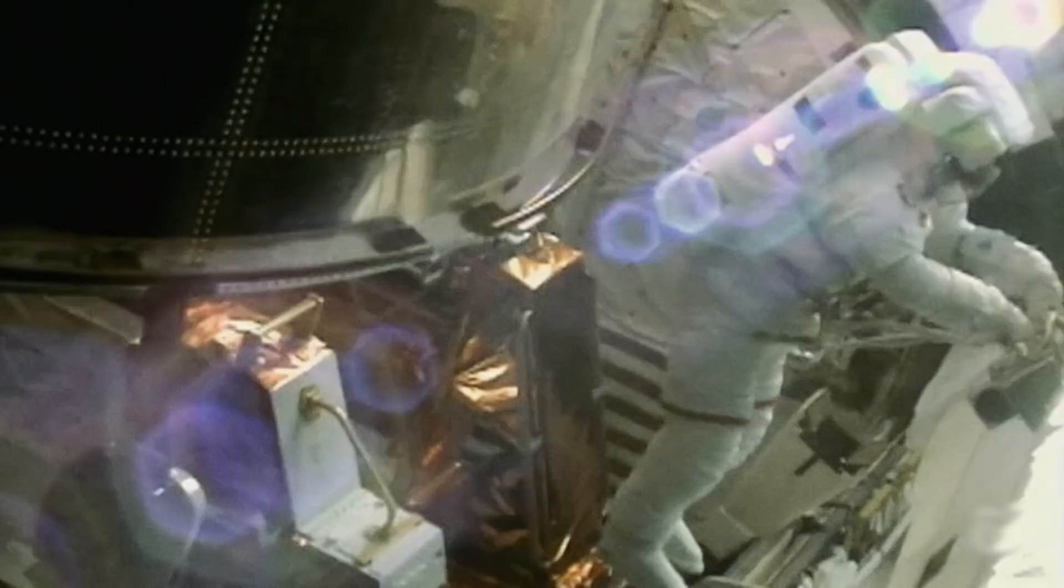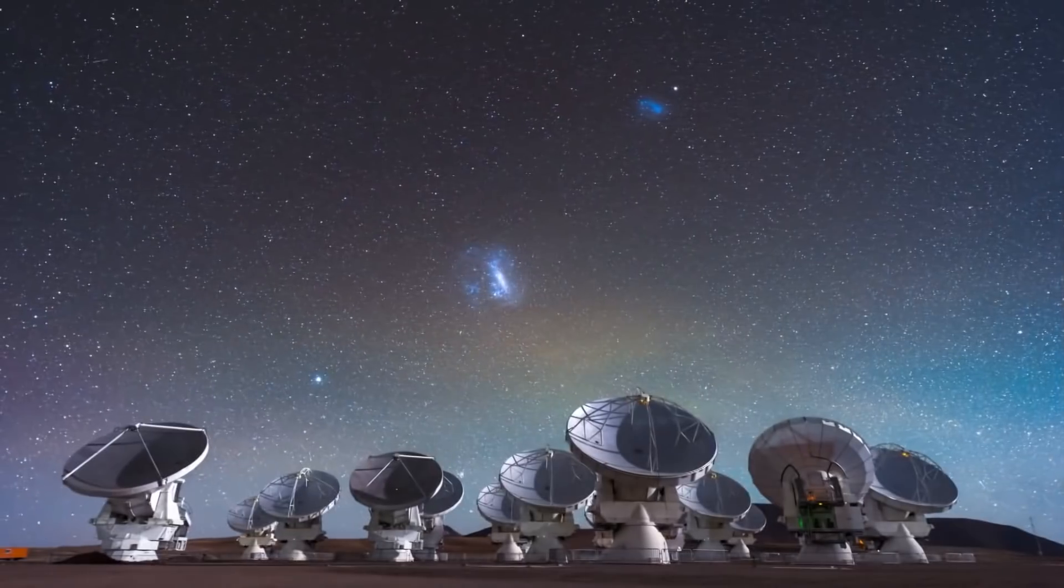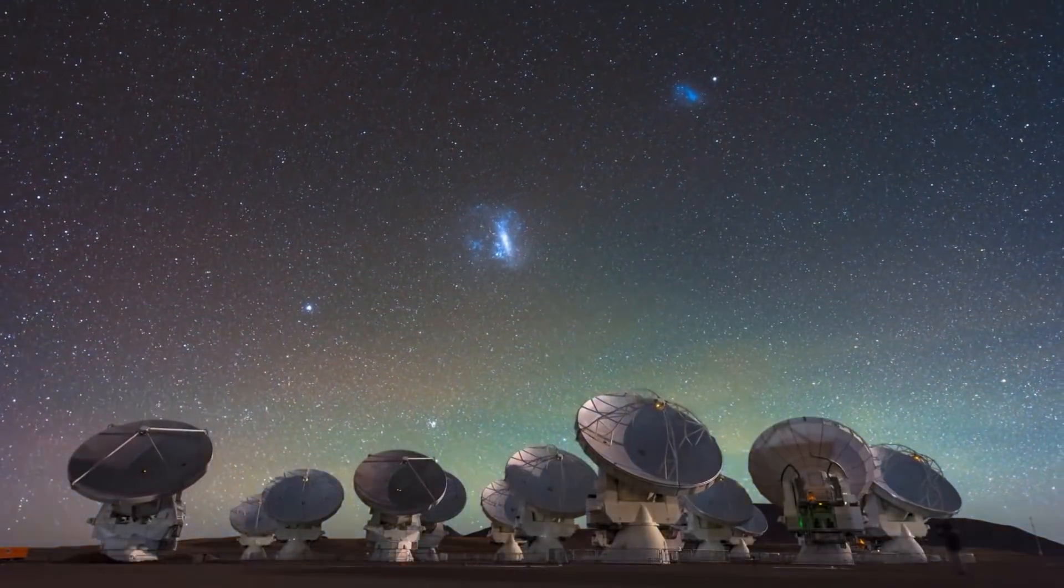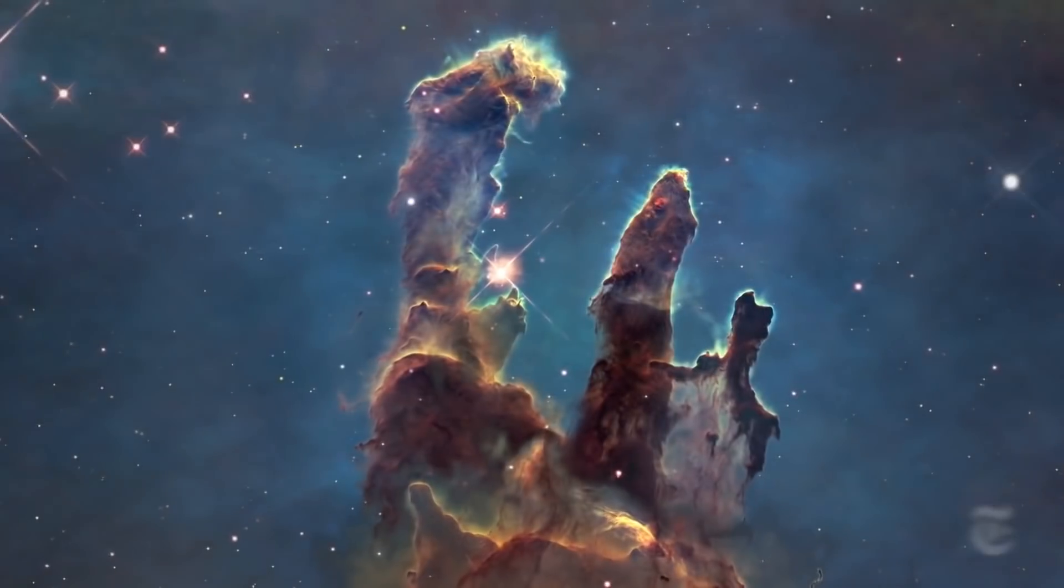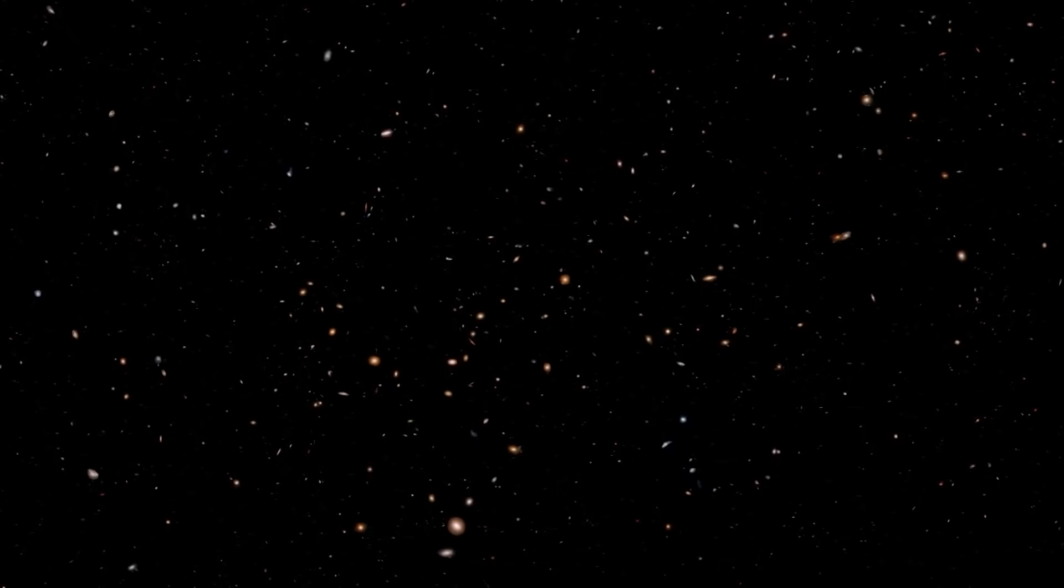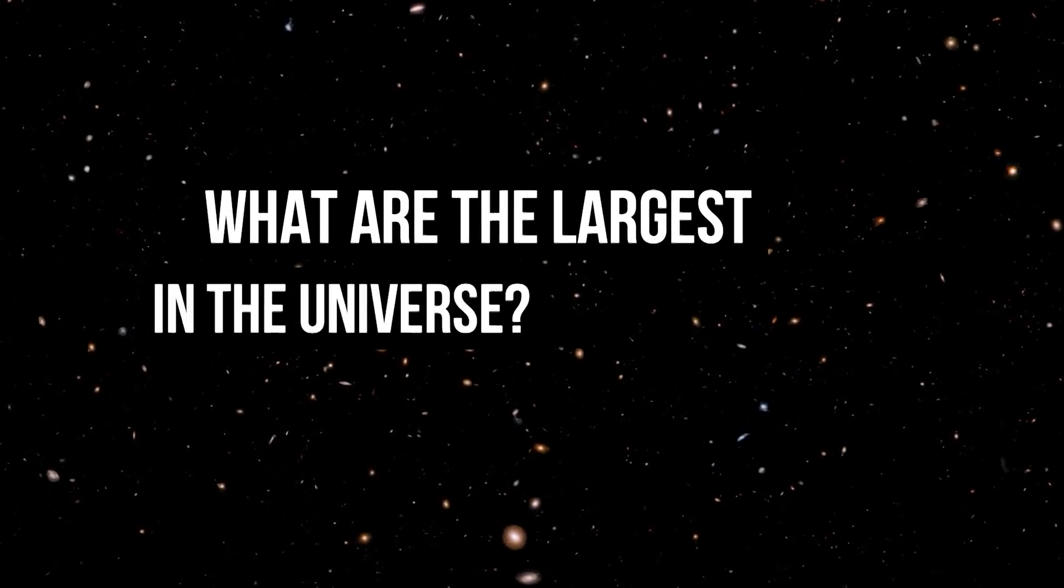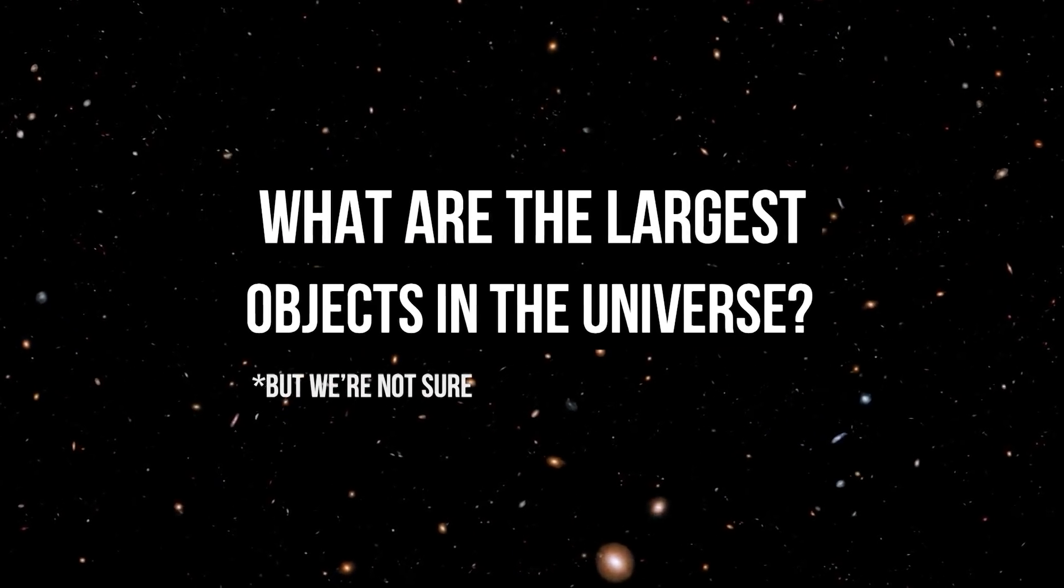Such blunders happen in the scientific world with striking regularity. In this video you'll figure out why NASA still hasn't kicked out certain scientists for cheating, how galaxies are born, and what objects in the universe are the largest, or at least we think they are.